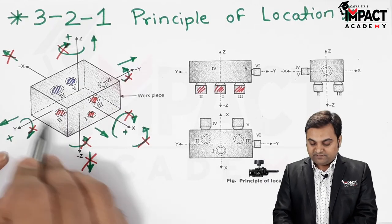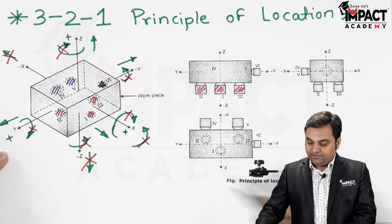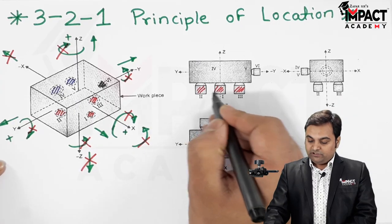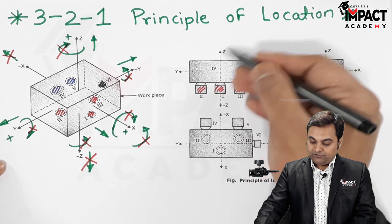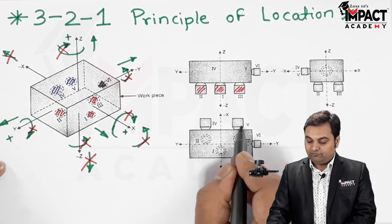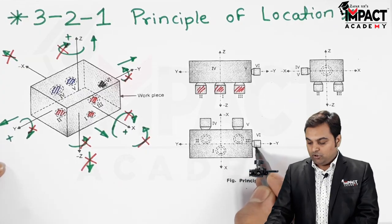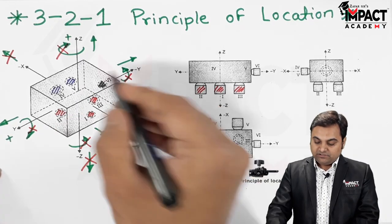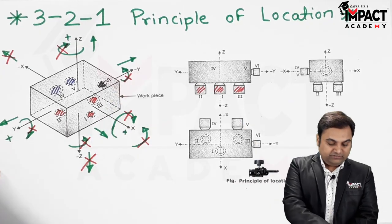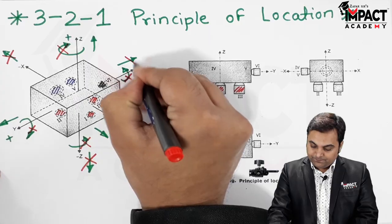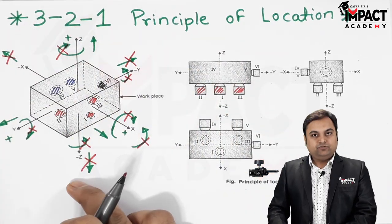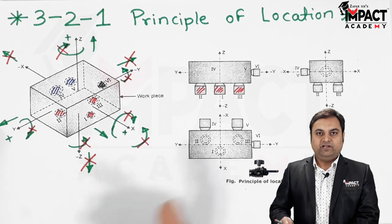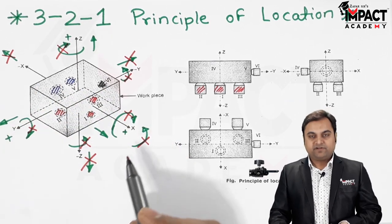We then introduce one more pin — pin six — along the plane perpendicular to both previous planes. As seen in the diagram, the front view has pins one, two, and three; the top view has pins four and five; and the side view has pin six. With the introduction of pin six, the object cannot move in the negative y direction. So in total, nine degrees of freedom have been restricted using six pins.